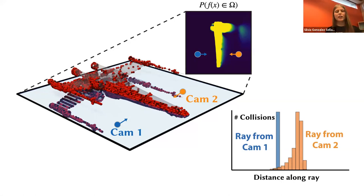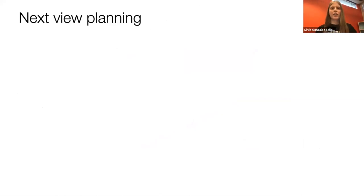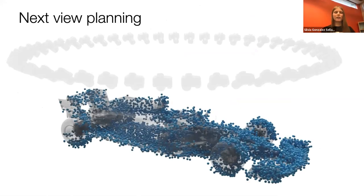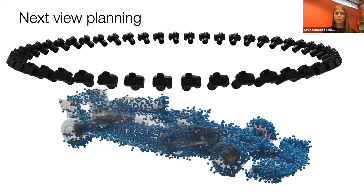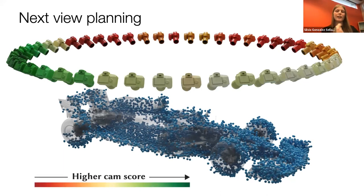Combining the ray casting query with integrated uncertainty enables planning the next best scanning position given a partial scan. We place many hypothetical cameras around the object, simulate rays for each, compute where they may intersect the surface using our method, and then ask: assuming I get new surface points there, how much would integrated uncertainty decrease? This lets us score cameras by how useful they'd be as the next scanning position — giving us useful information that would be impossible from naive Poisson reconstruction output alone.